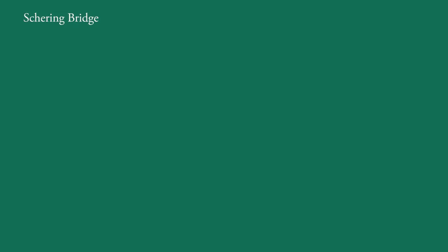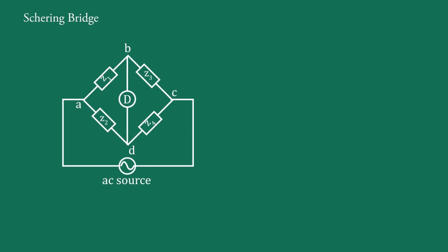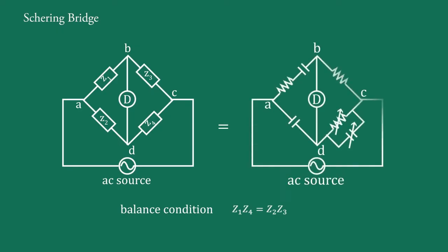This video covers the Schering Bridge, which is used to measure the capacitance of a given capacitor. We have studied the basic bridge balance condition in a previous video. The basic AC bridge balance condition is given as Z1·Z4 = Z2·Z3. If we replace the components Z1, Z2, Z3, and Z4 by specific components, a new bridge circuit is formed, known as the Schering Bridge.